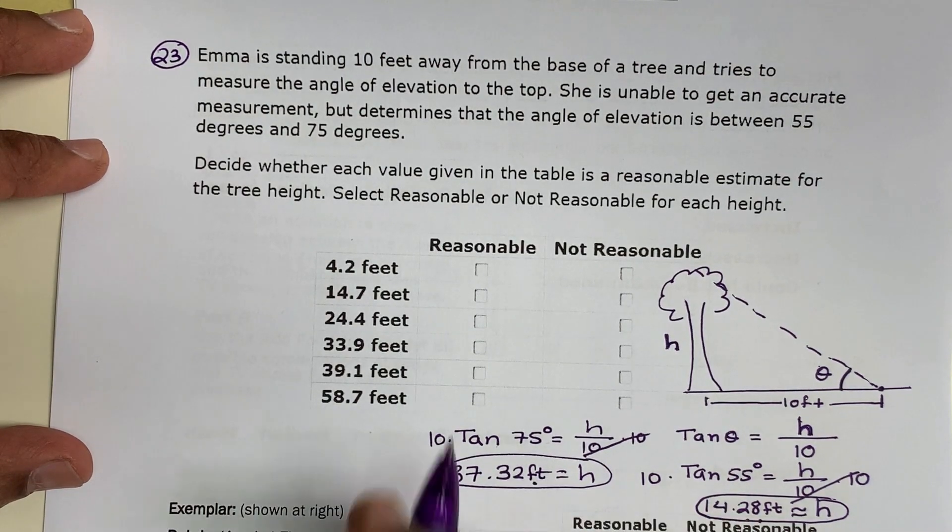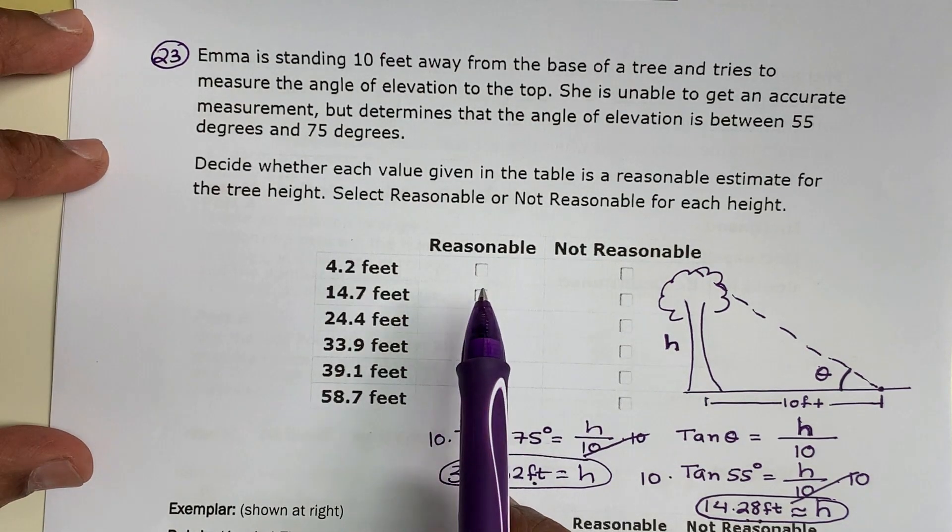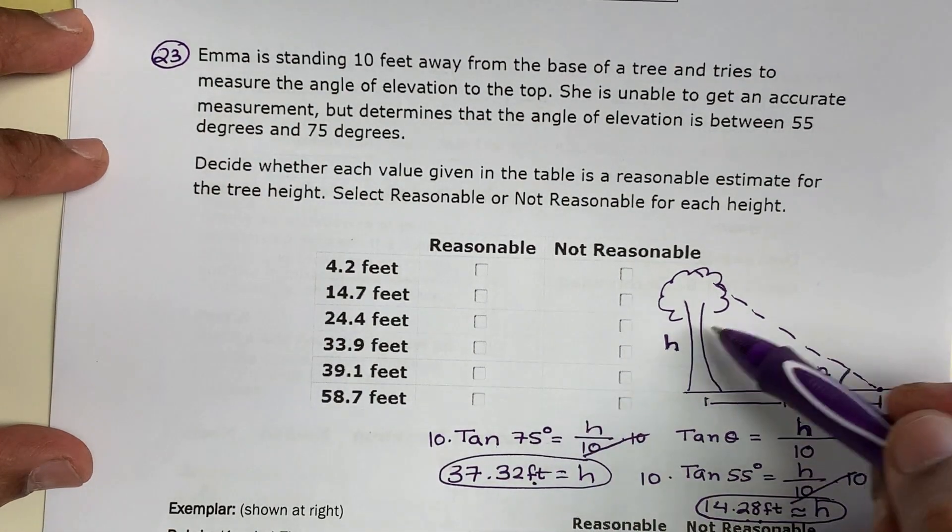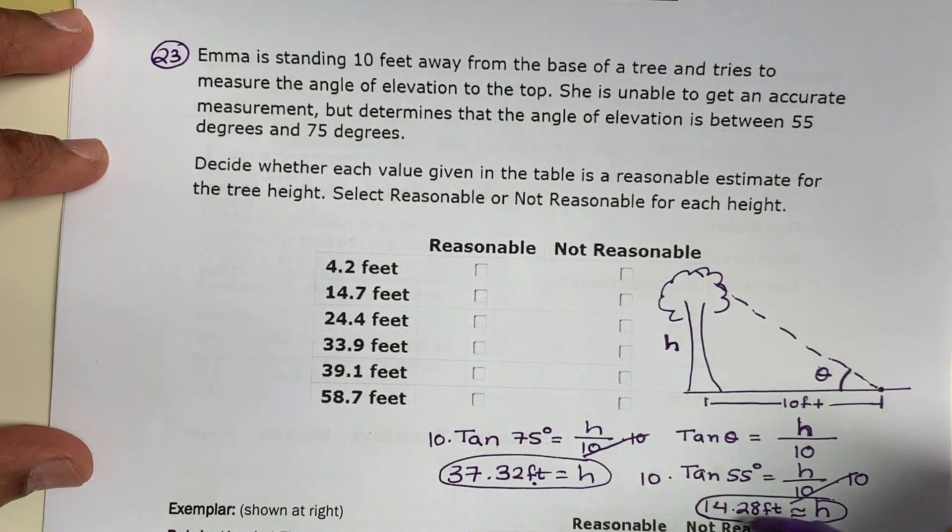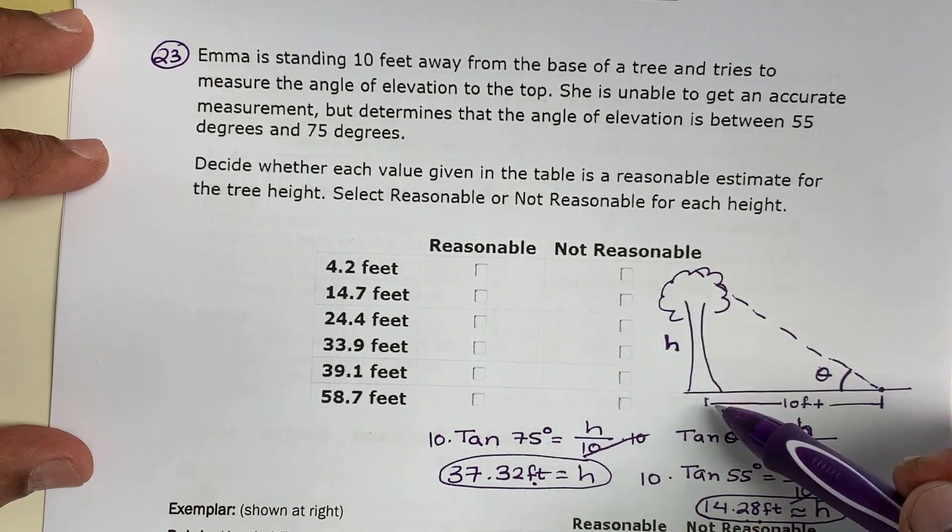If we compare that to the answers which are given to us, now we can correctly make out which is a reasonable answer and which is not. The height of this tree could be between 14.28 to 37.32 feet.